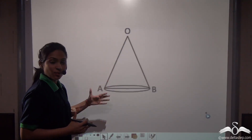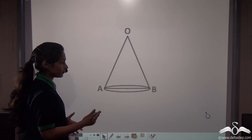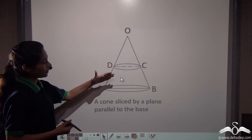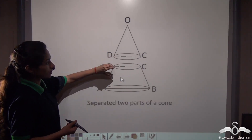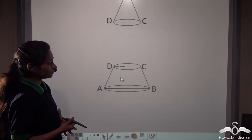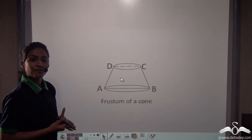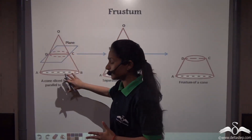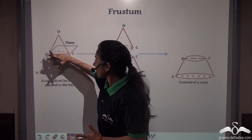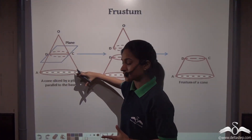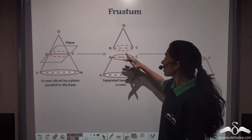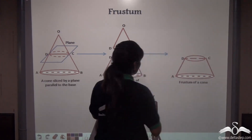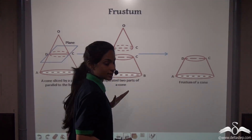Let's see how we can form a frustum of a cone from the cone itself. This is a cone — we have sliced it by a plane that was parallel to the base, so these are the two separated parts of the cone. The above part is the smaller cone, whereas the below part is called the frustum of a cone. This is how we get a frustum of a cone from the cone itself.